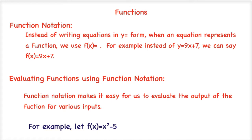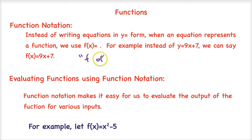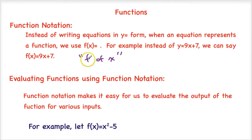When we're talking about function notation, basically we're going to take some of the things that we're familiar with. We've already been talking about equations in y equals form. But when we have an equation that represents a function, we'll use what's called function notation, or f of x equals form. So for example, instead of saying something like y equals 9x plus 7, we can say f of x equals 9x plus 7. The name of the function is f, and x is still our independent variable. In this case we're going to say f of x to identify this function f.